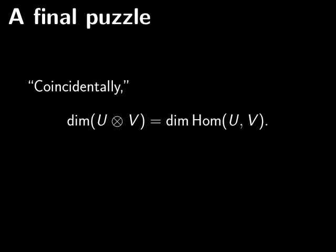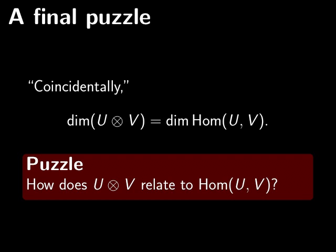And as a final puzzle, note that the dimension of U tensor V is the same thing as the dimension of linear maps from U to V. And this seems like kind of a coincidence. So as a puzzle, you should think about how U tensor V might relate to linear maps from U to V. Now, they have the same dimension. They're not naturally isomorphic. But they can be related. So that's something kind of fun for you to think about. And I'll stop there. Thank you.